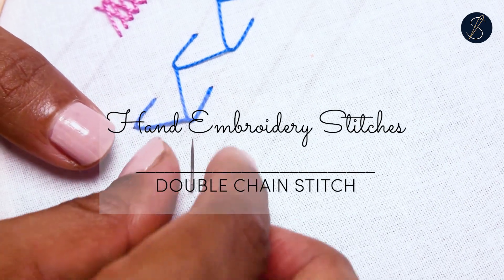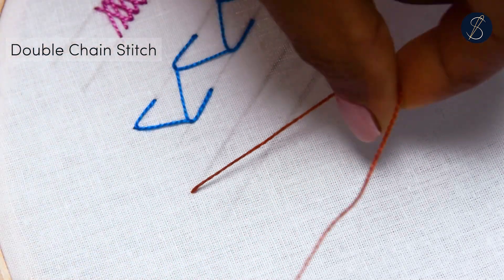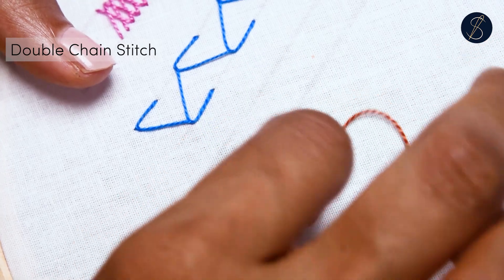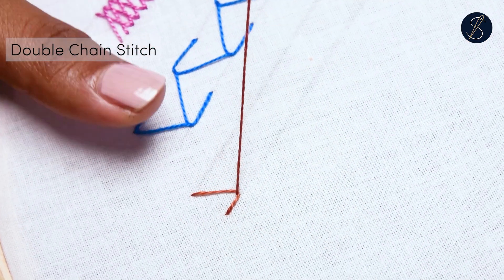The double chain stitch is worked between two stitch lines and is worked from the bottom to the top. Begin by coming out from one stitch line, pluck a bit of fabric on the other one, loop the thread under the needle and pull out.